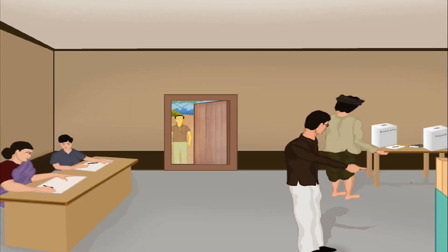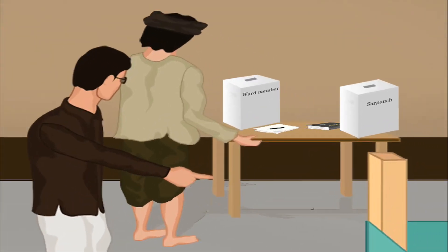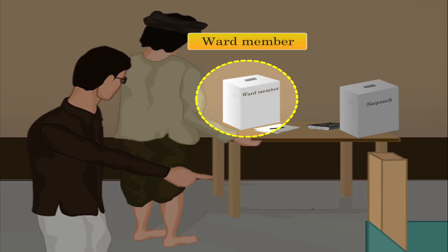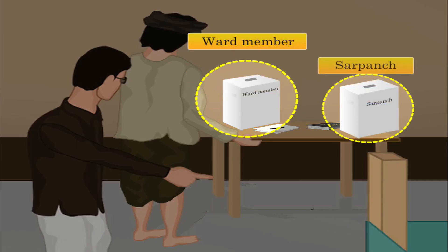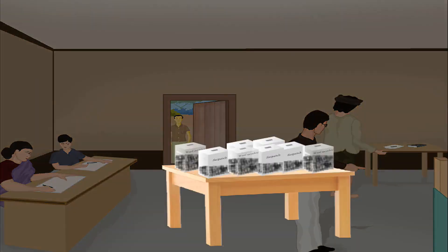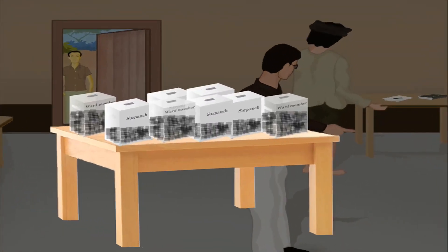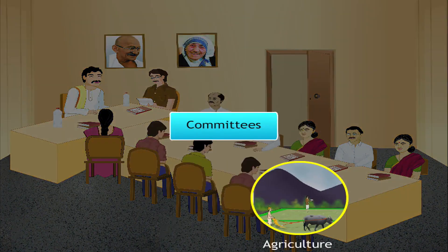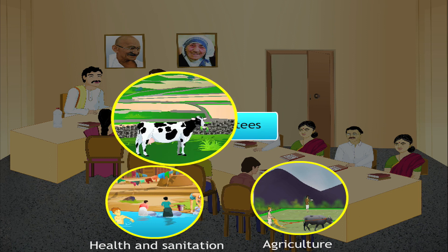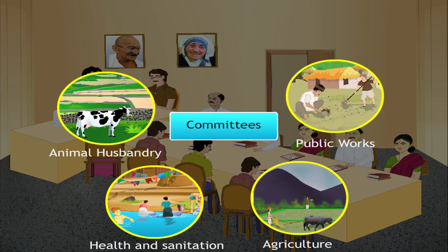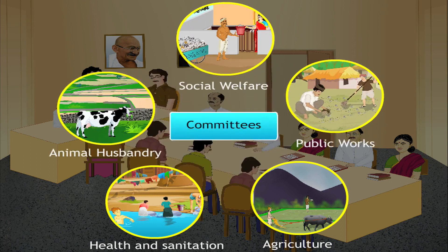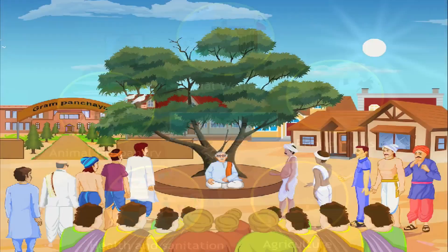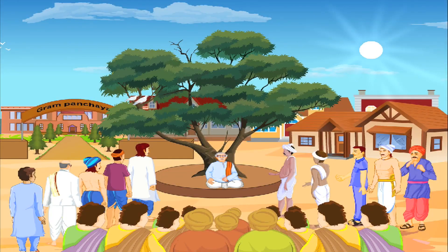Every person casts not one but two votes: one for the ward member and another for the sarpanch. The person who gets the maximum number of votes wins. There are various committees like agriculture, health and sanitation, animal husbandry, public works, and social welfare in the village gram panchayat to look after different areas of development in a village.